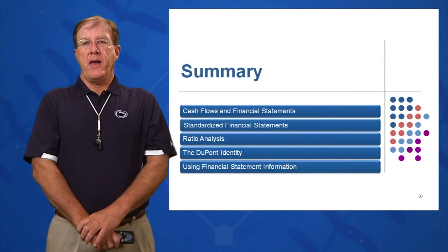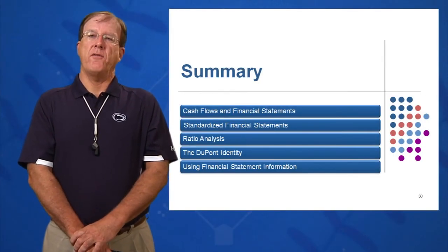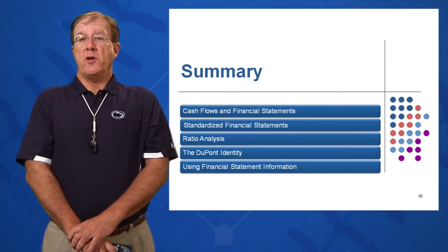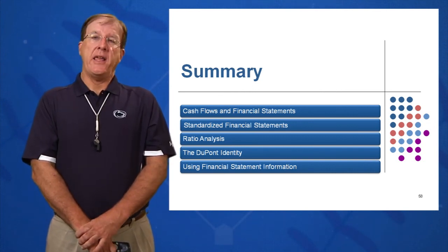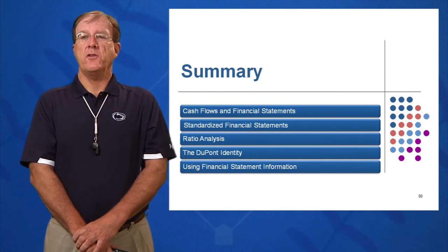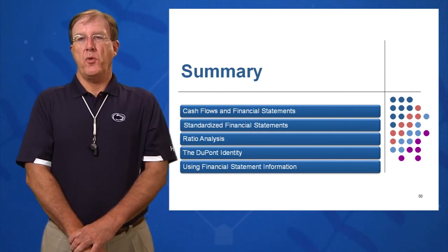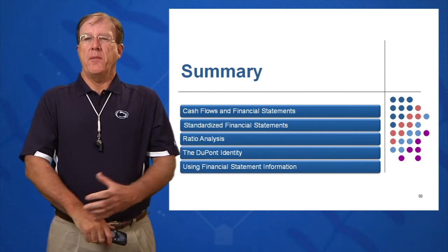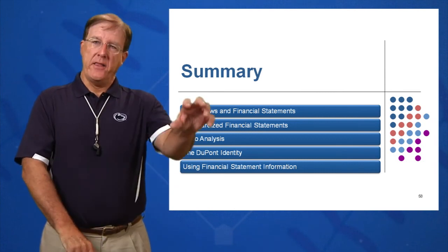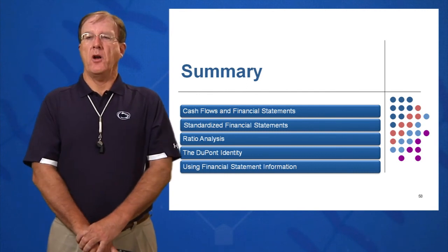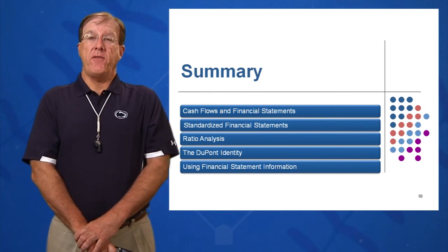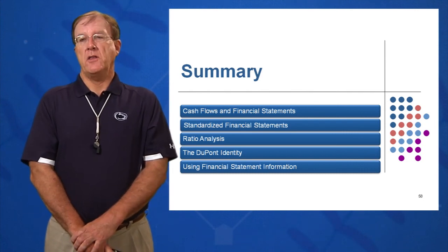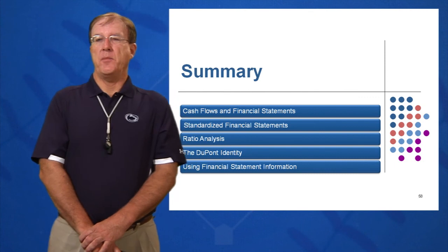In summary, by this point you should be able to do several things having read chapter three and covered session three. Understand what cash flow is, and that the statement of cash flows is the most important of the three financial statements. Be able to read them, understand how they're compiled, and where you get the information. Learning objective two: how to standardize a financial statement — divide everything by sales for an income statement, and by total assets for a balance sheet.